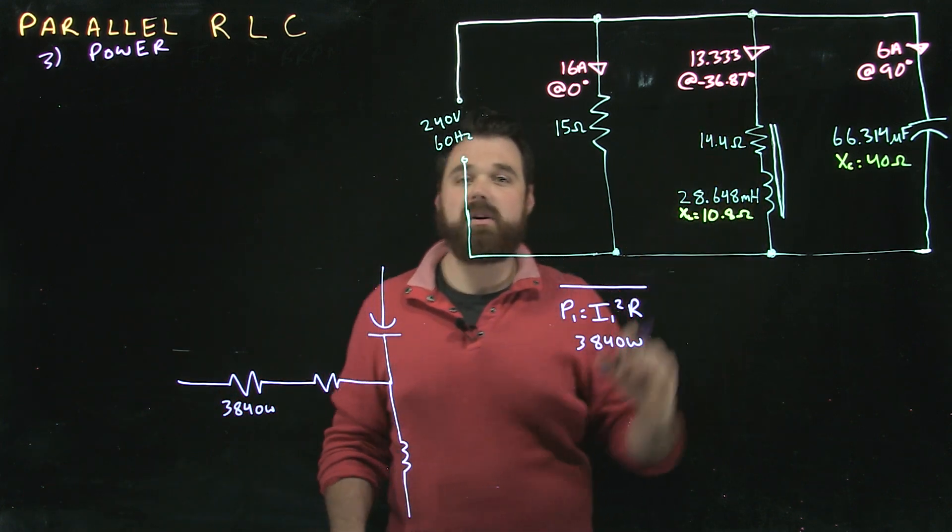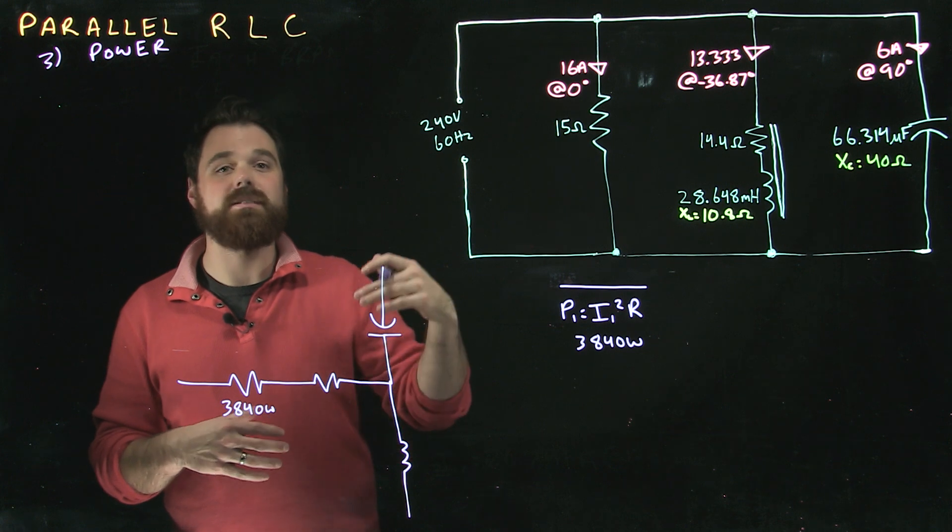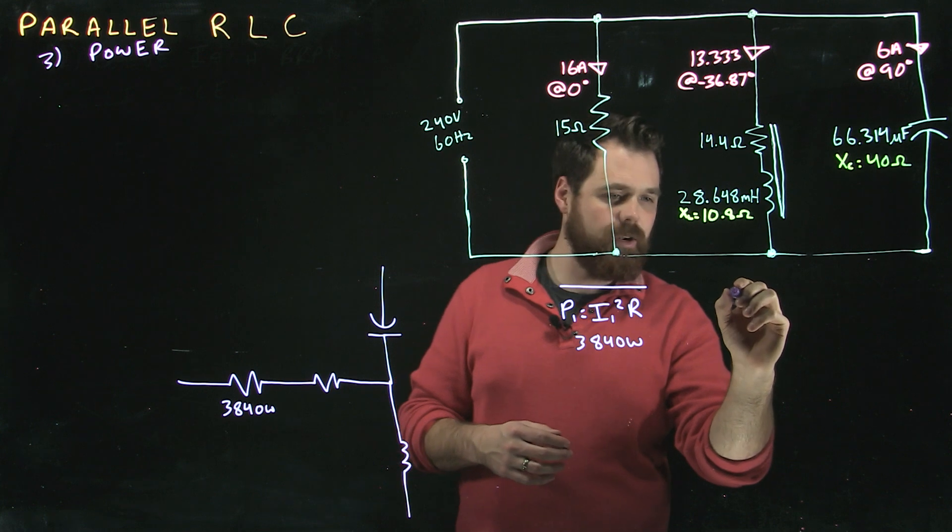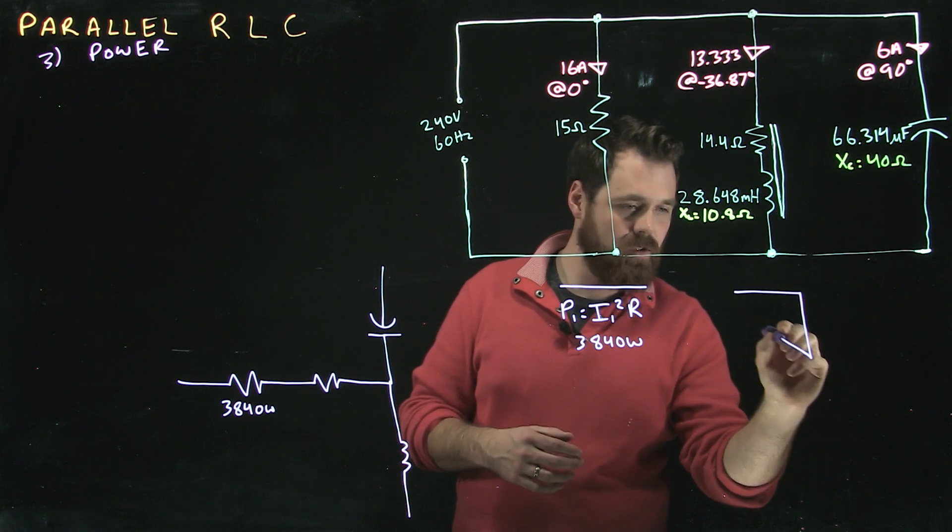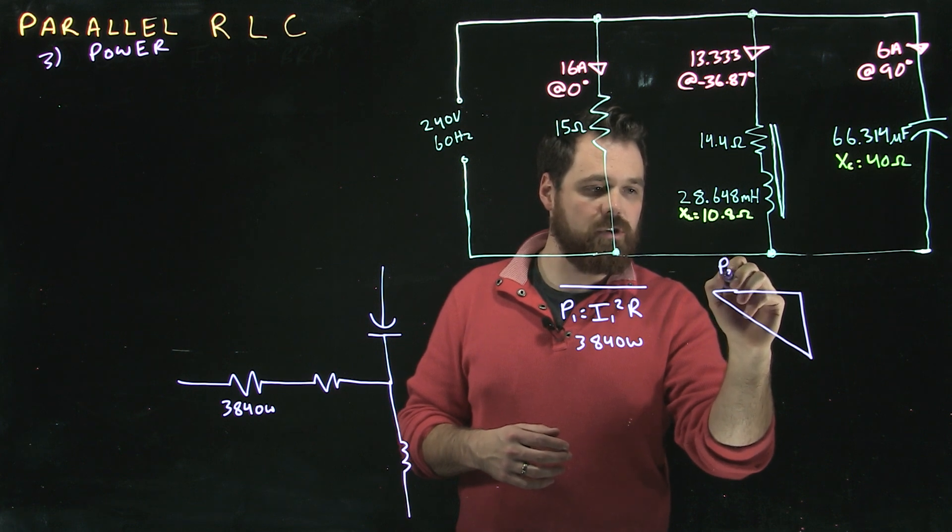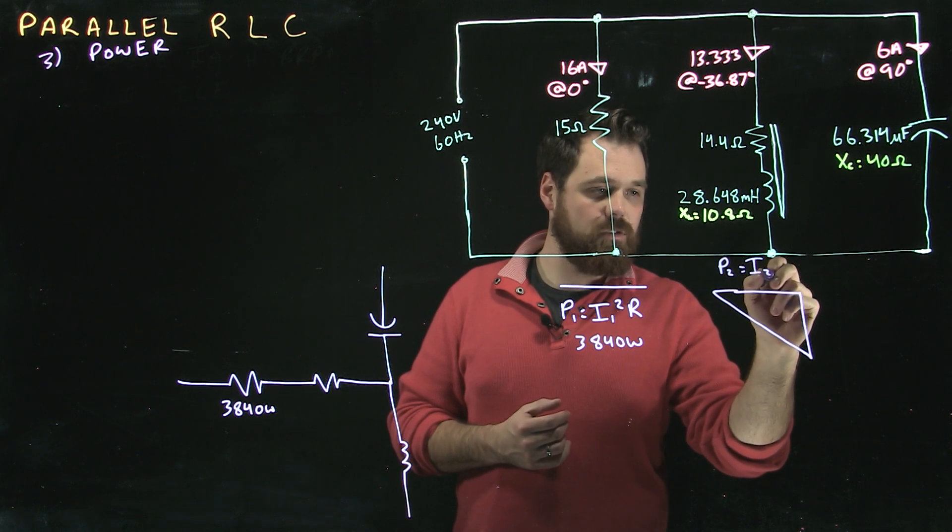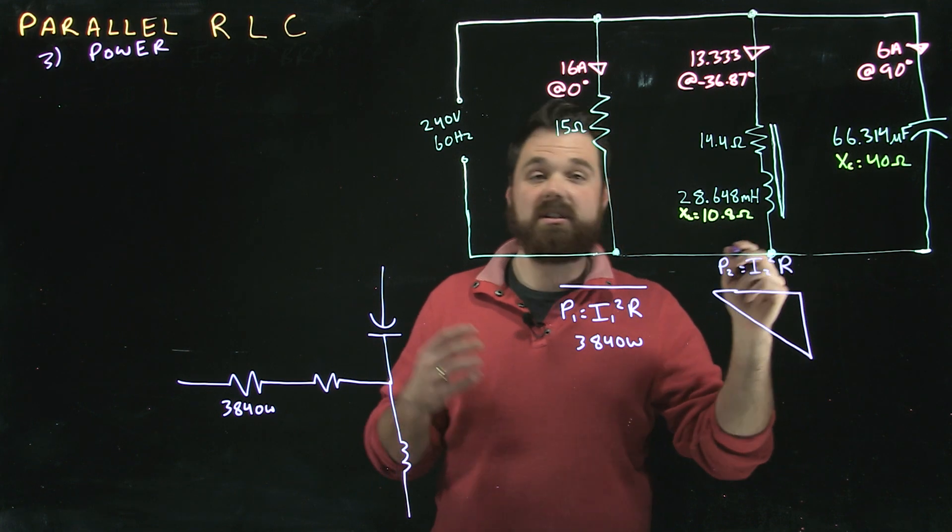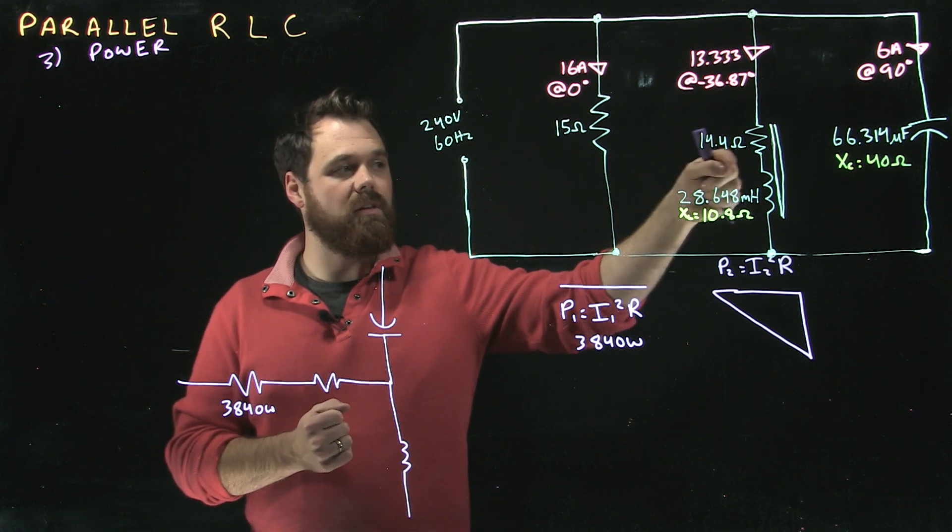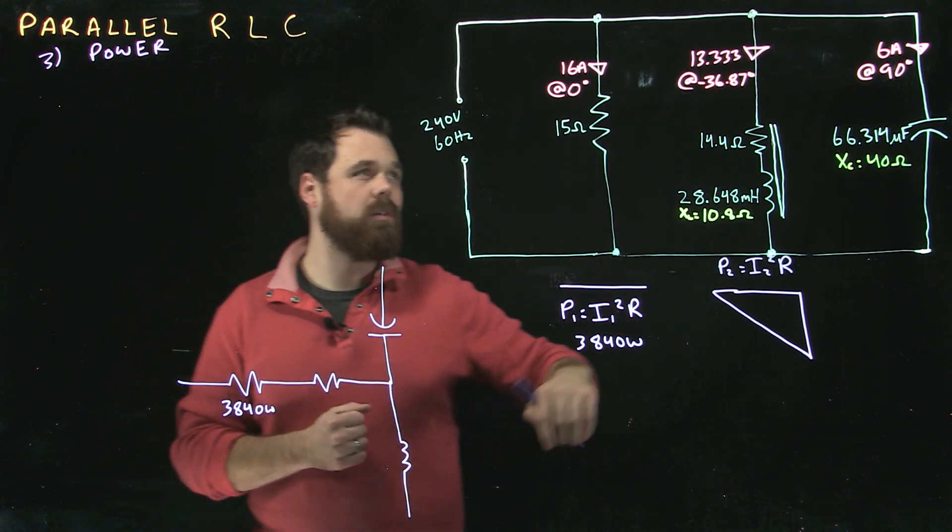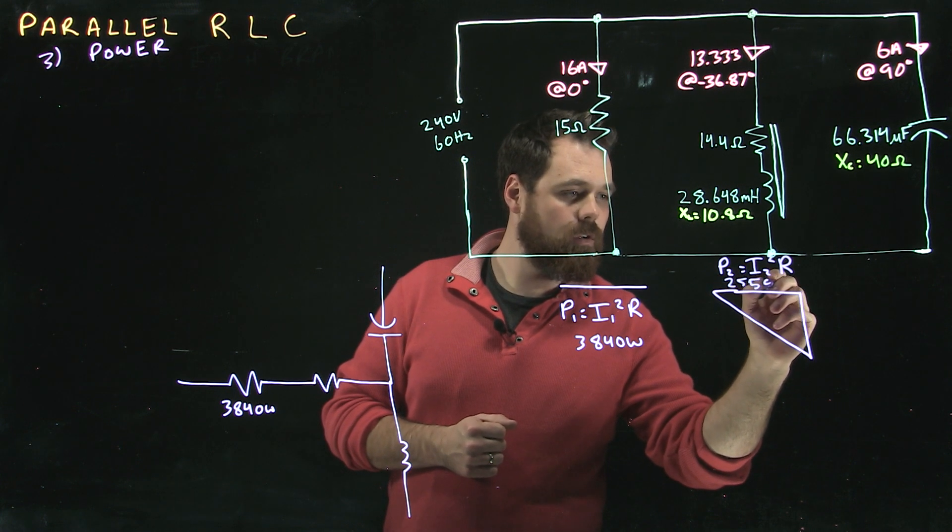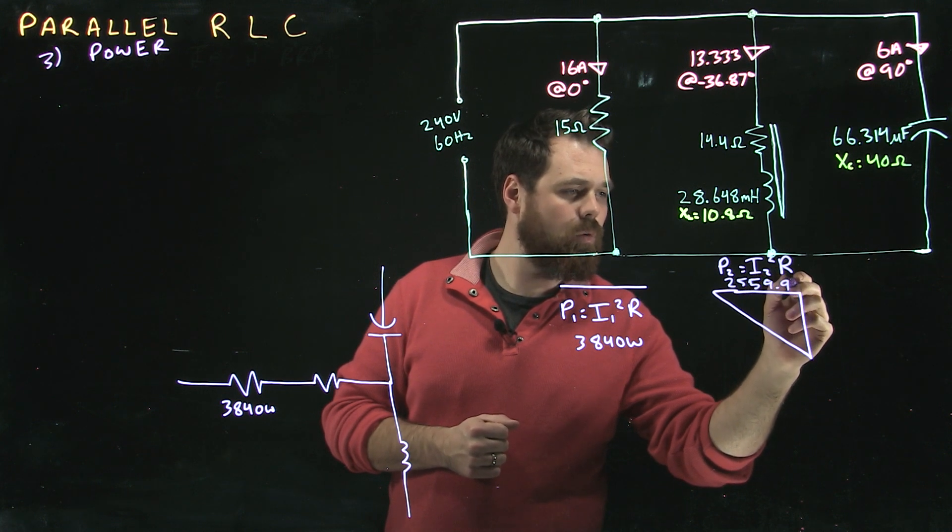Then I move along to my coil. Now my coil is always going to be the toughest part, because it has both the resistive and the reactive components. But we know it's going to create its own little triangle. Up here I'm going to go P2 power 2 equals I2 squared times the resistive component of the coil. Now it's very important that I'm using the current flowing through the coil, and then only the resistive component of the coil, which gives me 2559.9 watts.